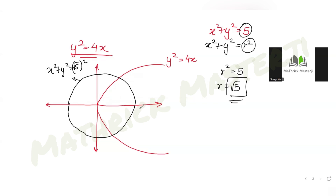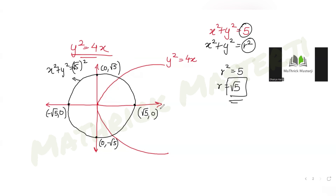With radius √5, the coordinates of the circle's intersections with the axes are: (√5, 0), (−√5, 0), (0, −√5), and (0, √5). These are the four intersection points of the circle with the x and y axes.